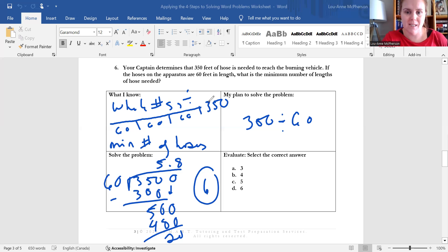So in the evaluation section, you are going to choose D, which is the rounded number and pull six hoses off of that truck. All right. That is it for the sixth question in our firefighter aptitude test preparation video series that focuses on solving word problems using a four step strategy that I teach in smart tutoring.